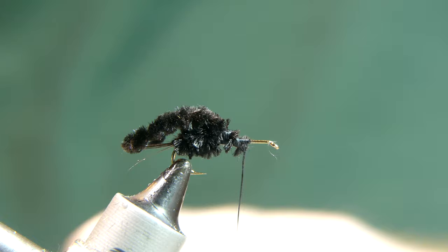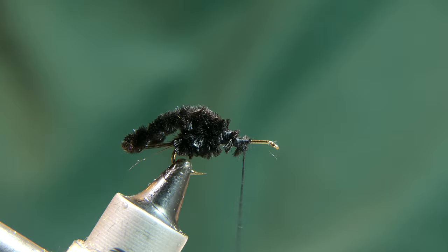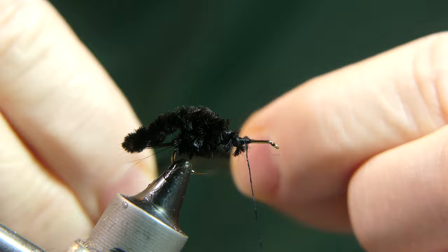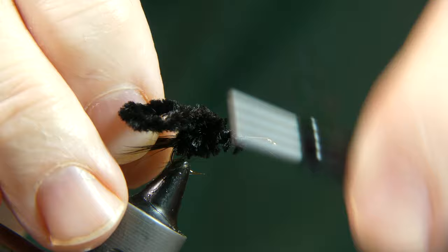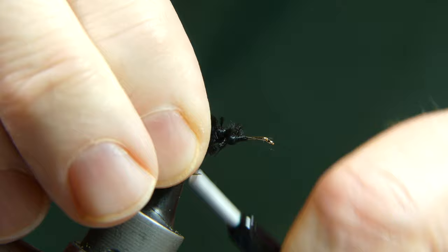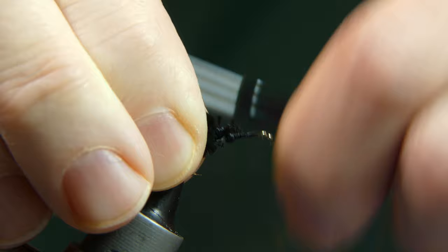Now you want to grab the piece of hackle that you selected earlier and that you used the barbules for the tail. I like to cut the feather down to about just a couple inches because you're only going to need a few wraps, and you want the shortest barbules off of that feather. You don't want very long barbules sticking out on this fly.